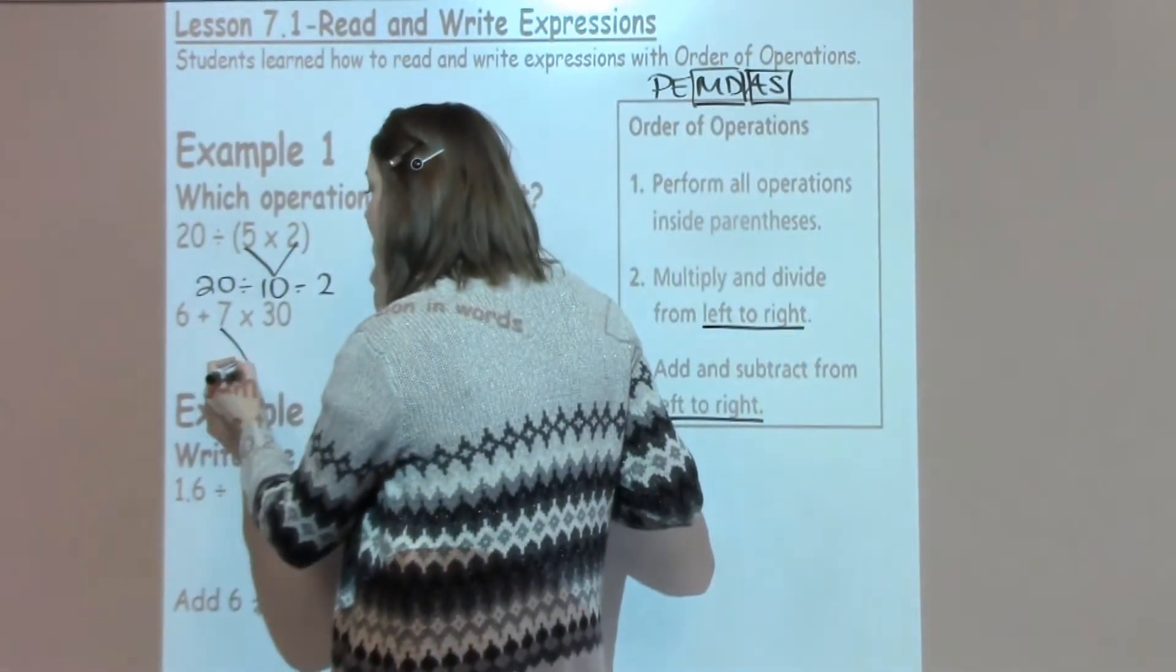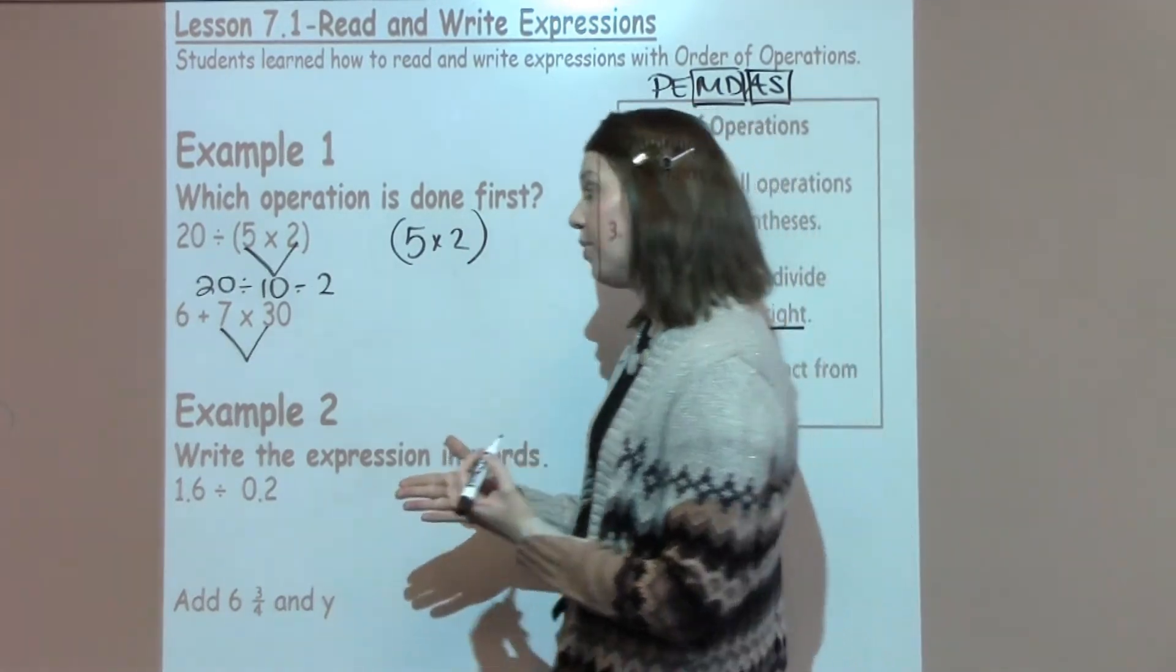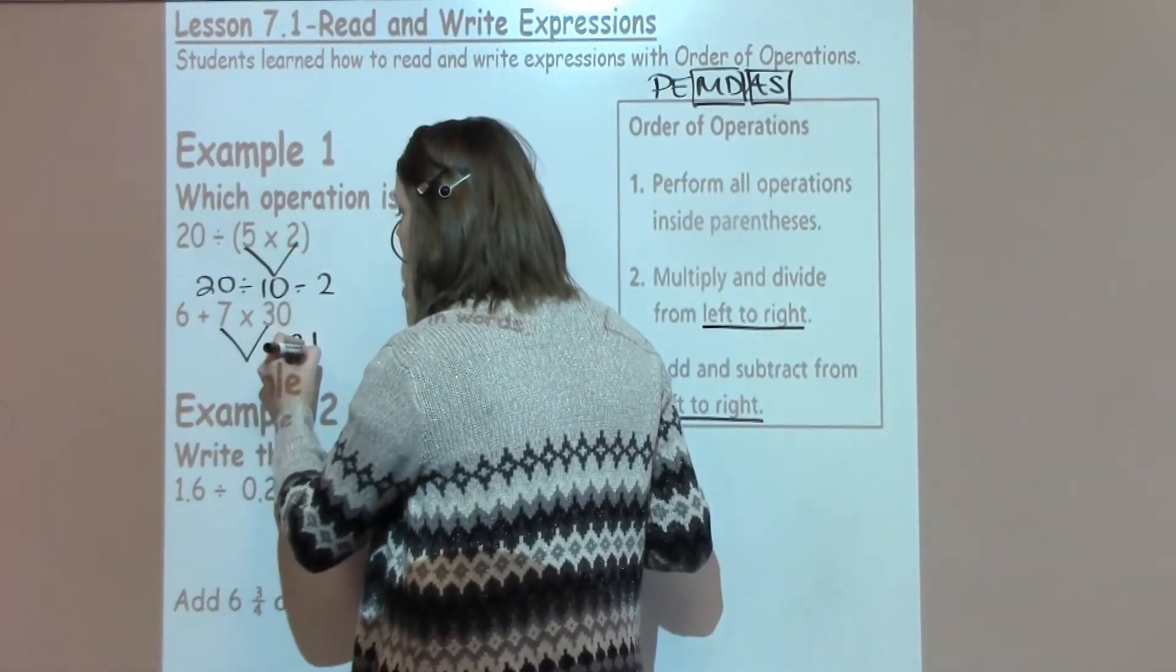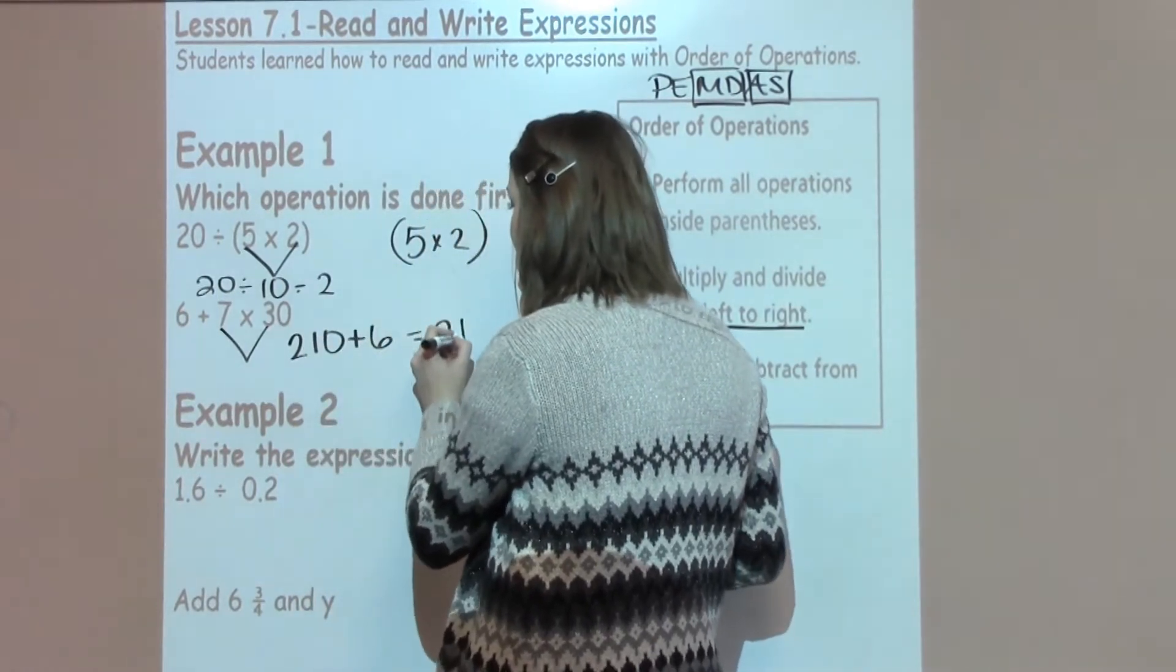I have 7 times 3, or 7 times 30, which is the same as 7 times 3, which is 210 plus my 6, which would give me 216.